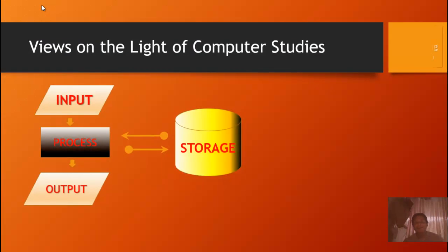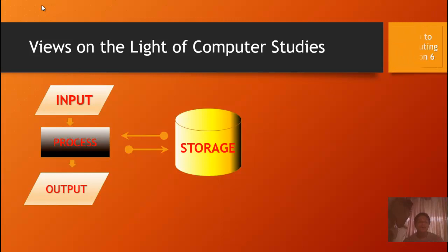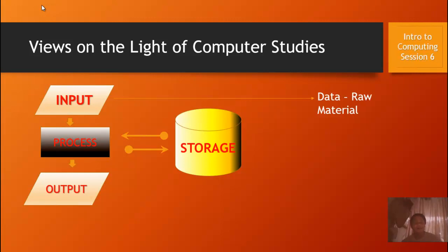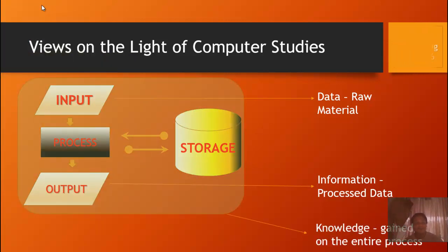What we have here is the IPO model. What does this IPO model have to do with the information continuum? This IPO model was previously discussed in the last session. The IPO model serves as a blueprint of the information continuum. The input is actually the data — the raw material. Once this raw material is in the process, it becomes information, and what is gained in the entire process is the so-called knowledge.